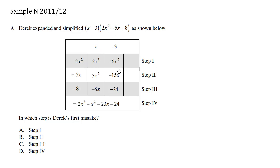So this row here is step 1. 2x² times x indeed is 2x³. -3 times 2x² is -6x². This is correct.